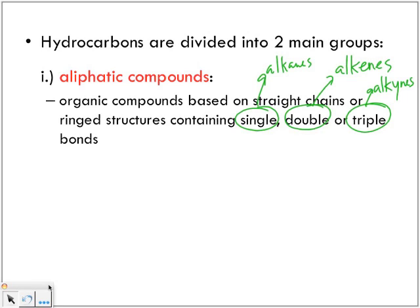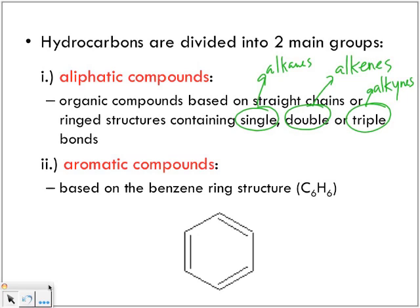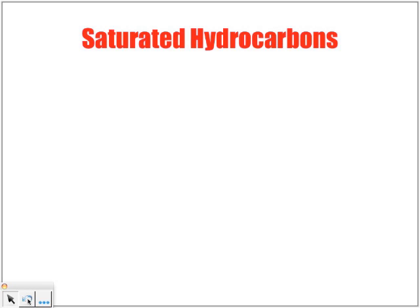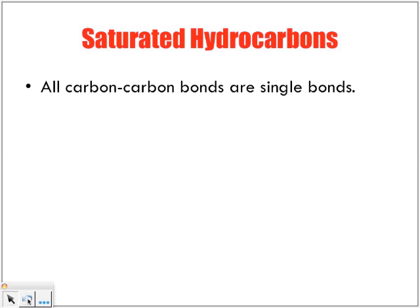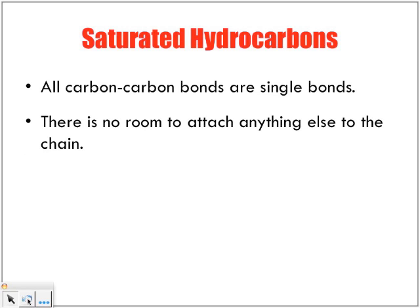Today's lesson is about naming alkanes. The other type of hydrocarbons are the aromatic compounds, based on the benzene ring structure C6H6. These aromatics give aromas and are usually ring-shaped. We're not going to look at those right now — we're going to focus on the straight chains and branched chains of aliphatic compounds. Saturated hydrocarbons have all carbon-carbon single bonds; anything considered saturated contains only single-bonded carbon atoms, with no room to attach anything else to the chain.